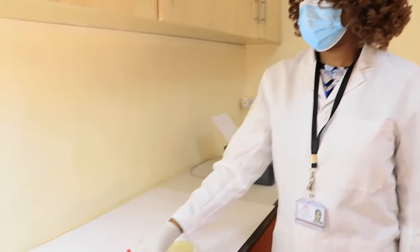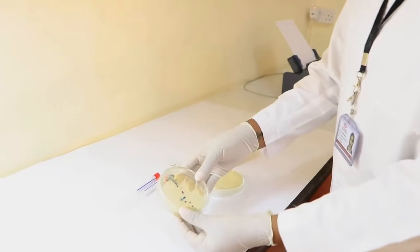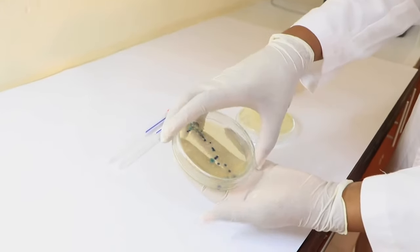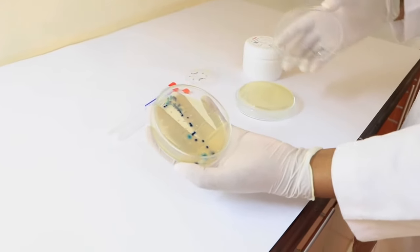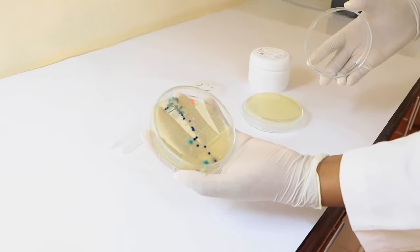After the plates have incubated for 24 to 48 hours at 37 degrees Celsius, count each colony on the plate. Each colony represents one bacterium which forms a colony and is called a colony forming unit.